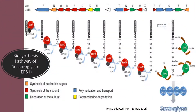Now, this is the biosynthesis pathway of succinoglycan, also known as EPS1. This pathway is catalyzed by a group of exoenzymes, which are encoded by the exo-EXS gene. Firstly, there is elongation of the main sugar chain, where the exoenzymes add different kinds of sugar to the chain. After that is the addition of side chains to the main chain, followed by decoration of the subunit. Multiple subunits are then combined together and polymerized, transported out of the cell as succinoglycan.